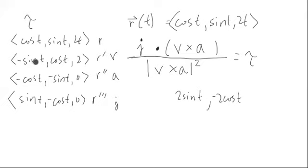And then for the last component, we have sine squared, and then we have minus negative cosine squared, so it's just plus cosine squared, so we just get one. So this is what V cross A looks like.